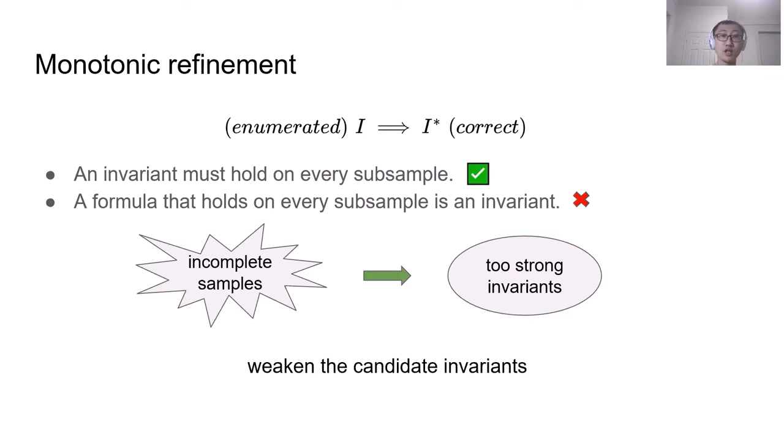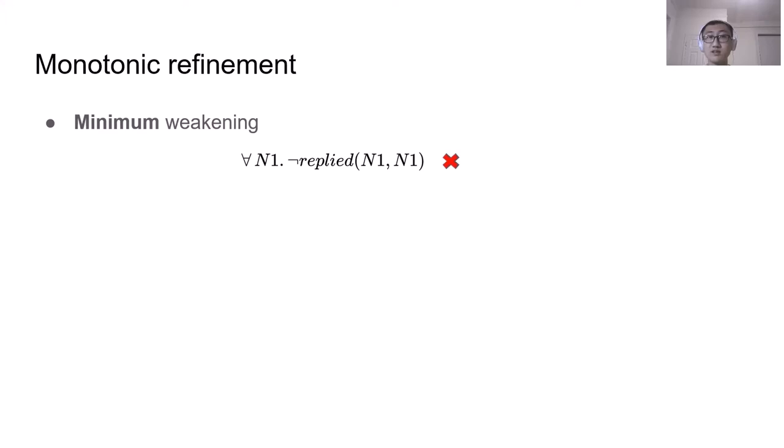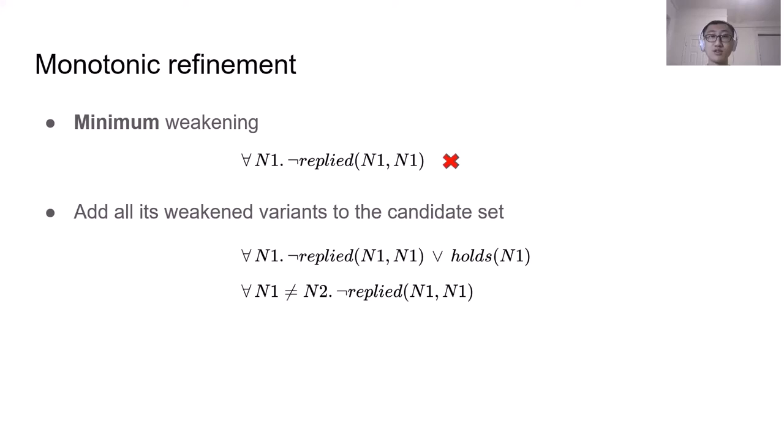Starting from these too strong invariants, we need to monotonically weaken these invariants until they become the correct invariants. In this work, we propose a minimum weakening algorithm. Let's say this candidate invariant fails the IV check. One simple solution is to discard this invariant. The problem is that it may over weaken the invariant. What we propose is that we add all its weakened variants to the candidate set, including these two invariants. Previously, they can be implied by the first broken invariant, but now they need to be reconsidered. Later, we will let IV determine whether these weakening variants are correct or not. Our minimum weakening algorithm has the property that it never over weakens the invariant and bypasses the correct invariants in between.